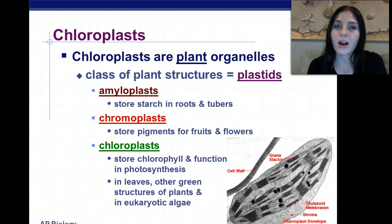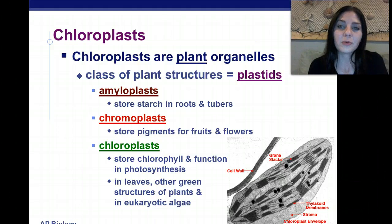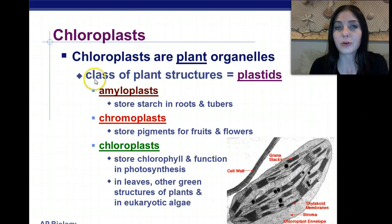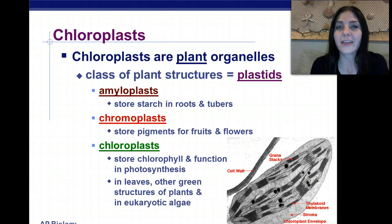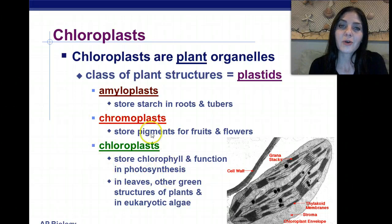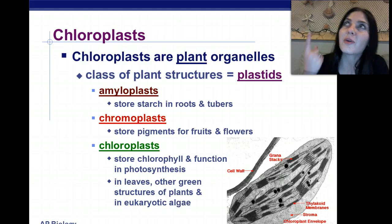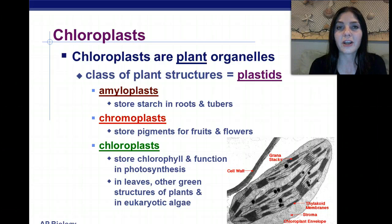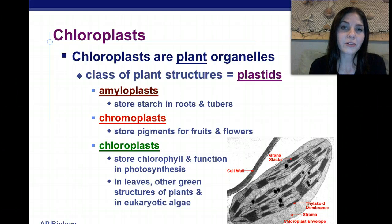The next organelle we're going to talk about are the chloroplasts. These are found only in plant cells and photosynthetic algae, which are protists. Plant organelles are broken up into classes called plastids. We have amyloplasts, which store starch in roots and tubers — similar to amylose and the enzyme amylase that breaks down starch. We have chromoplasts, which store pigments for fruits and flowers. And then we have chloroplasts, which store chlorophyll and function in photosynthesis, converting energy from the sun into oxygen and glucose.